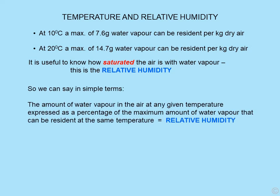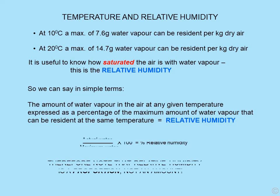In simple terms, relative humidity is the amount of water vapor in the air at any given temperature, expressed as a percentage — a proportion — of the maximum amount of water vapor that can be resident at the same temperature. There's a little equation: actual over maximum, times 100% RH. Note that relative humidity is a proportion, not an amount.